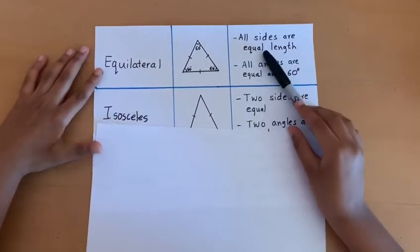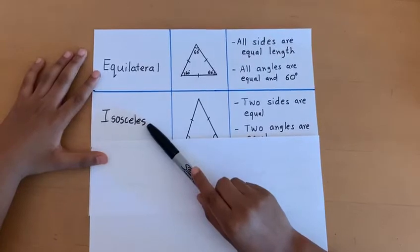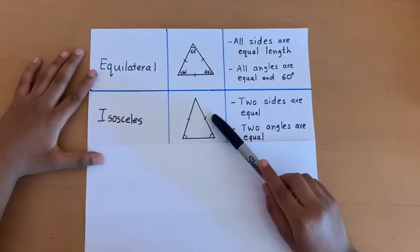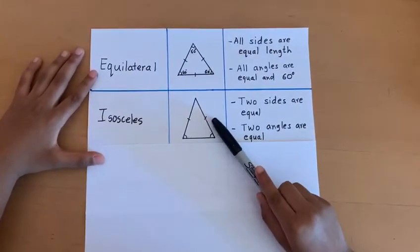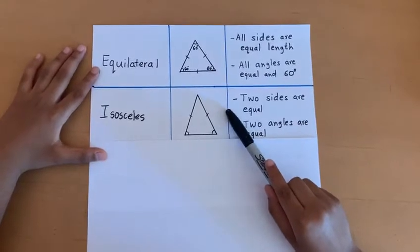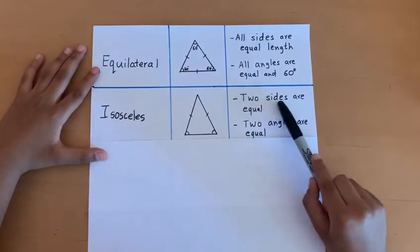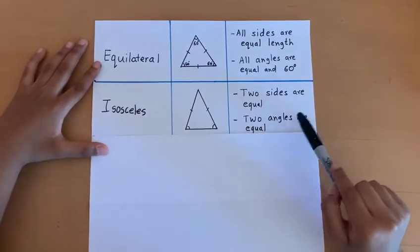Our second type of triangle is the isosceles triangle. This is what an isosceles triangle looks like. The factors that make up an isosceles triangle are two sides are equal and two angles are equal.